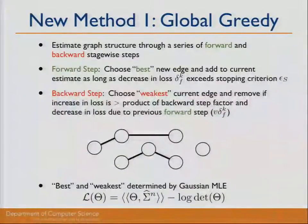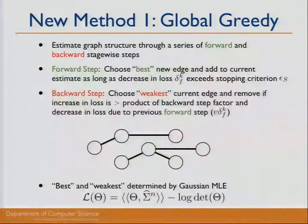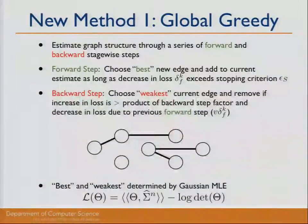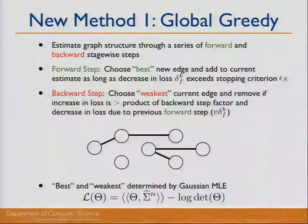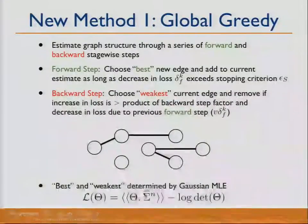In choosing the best new edge, we need to look at all P-choose-2 possible edges, but we only need to perform single-variable optimization at each step, which is very fast. Furthermore, because these optimizations don't depend on each other, they can all be done in parallel, making the method very fast.